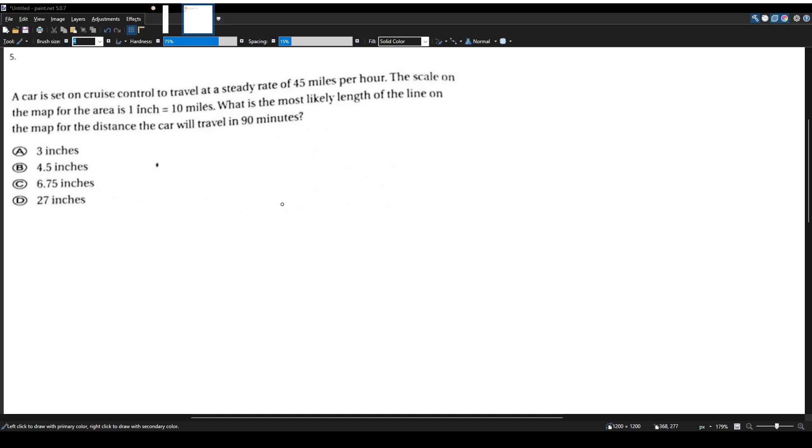Let's answer another Math CST question for the multi-subject exam. A car is set on a cruise control to travel at a steady rate of 45 miles per hour. The scale on the map for the area is 1 inch equals 10 miles. What is the most likely length of the line on the map for the distance the car will travel in 90 minutes?